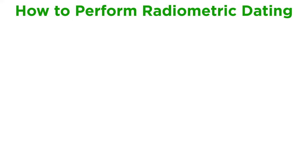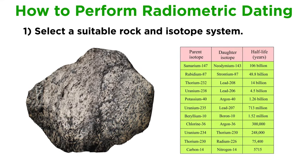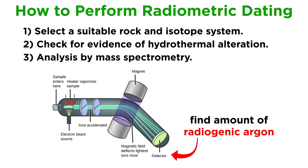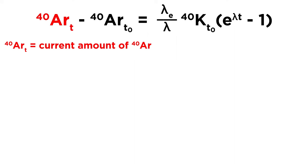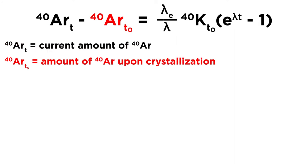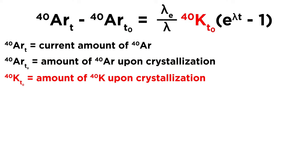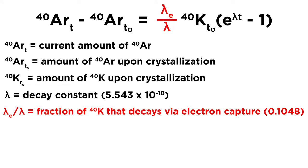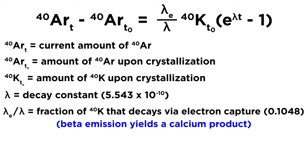Let's now go over how the radiometric dating process works. First, a suitable rock and an isotope system must be chosen. Let's say our hypothetical rock contains biotite as its only source of potassium, so we will use the potassium-argon system. Geologists must then check the rock's minerals with a microscope to ensure that the rock has not been hydrothermally altered in any way. The sample is then analyzed by a mass spectrometer to determine the amount of radiogenic argon, which can then be used to calculate the age using the following formula: where 40Ar(T) is the current amount of radiogenic argon, 40Ar(T0) is the amount of argon-40 at the time of crystallization, 40K(T0) is the amount of potassium-40 at the time of crystallization, lambda is the decay constant (5.543 × 10⁻¹⁰), and λE/λ is the fraction of potassium-40 that decays via electron capture, which is 0.1048, as potassium-40 can also decay to calcium-40 through beta emission.